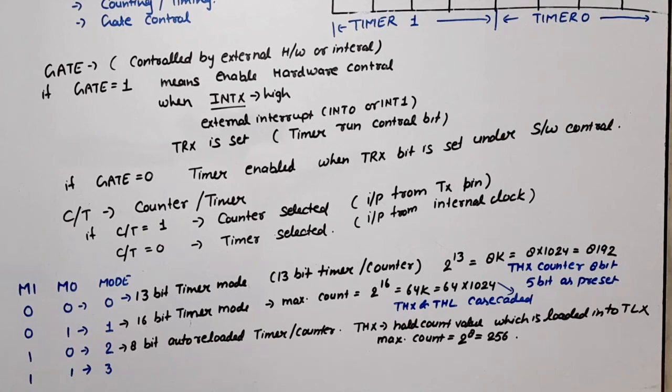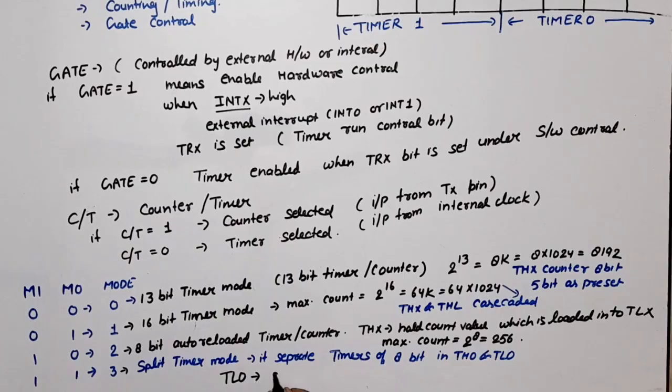Last is mode 3. Mode 3 is the split timer mode. It separates timers of 8-bit into TH0 and TL0, in which TL0 uses control bits of Timer 0 and TH0 uses control bits of Timer 1.